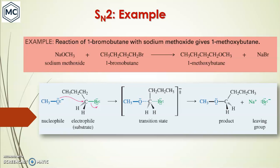This is an example of an SN2 reaction: 1-bromobutane with sodium methoxide gives 1-methoxybutane. You can see the nucleophile approaching the electrophile and a transition state forming. One important point: there is an inversion of configuration at the carbon center — the nucleophile attacks from the back side, this part gets inverted, and the product is formed.